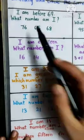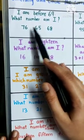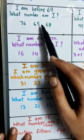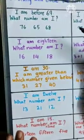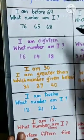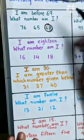It is, this number is 76, this is 65, and this is 68. 65, 66, 67, 68 and 69. Before 69, there is 68. So, we are going to circle 68.